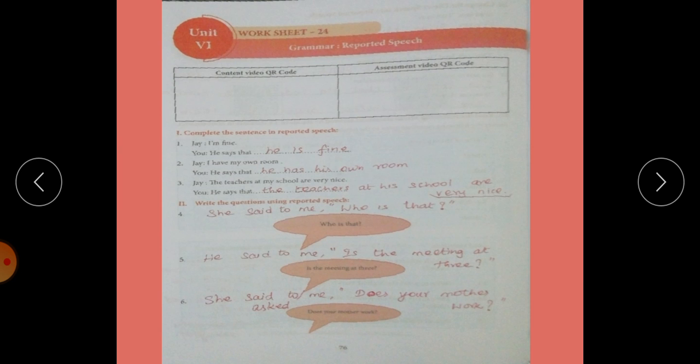Yena says vandhita namatayans vandhi change pannamata. Then Jay. I have my own room. He says that he has his own room. Next. The teacher at my school are very nice. He says that the teacher at his school are very nice.